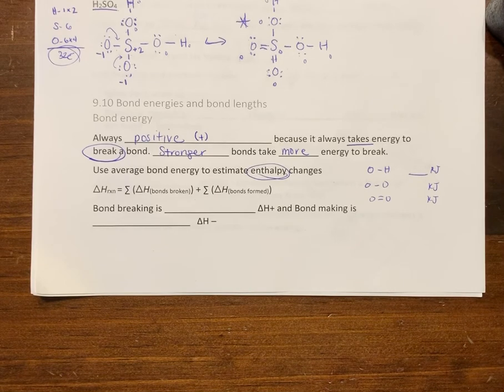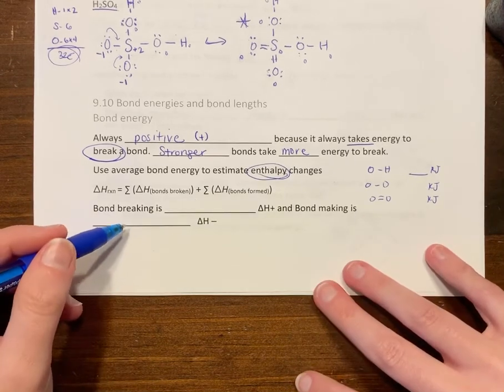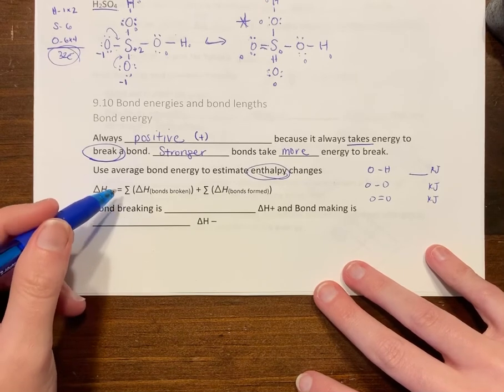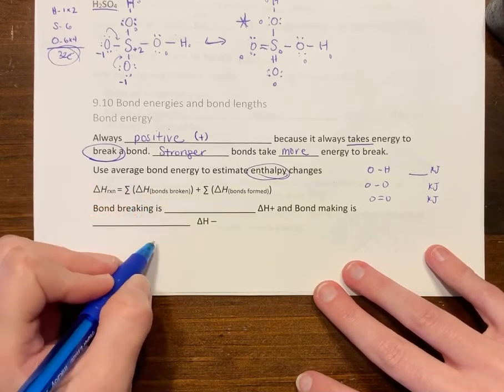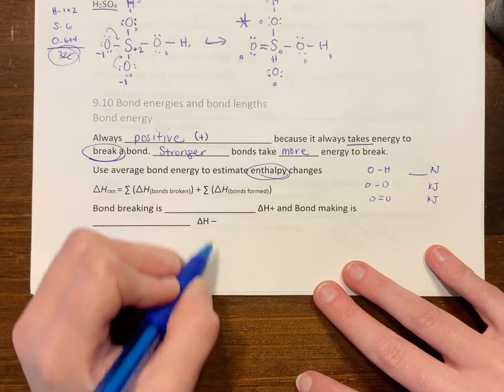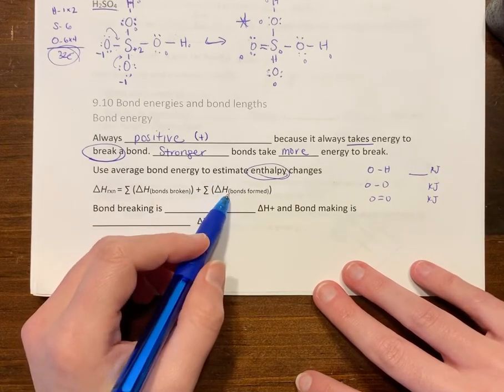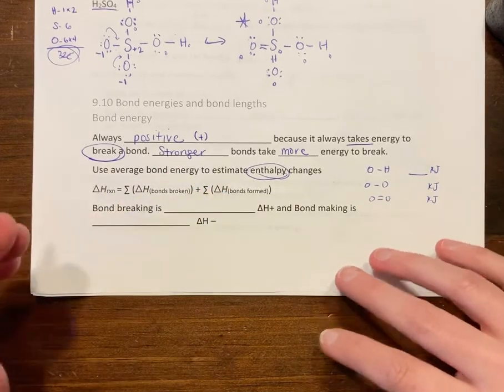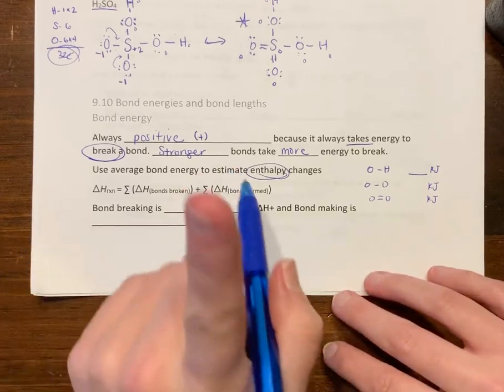It's plug and chug. You count up how many bonds that you break, then you add how many bonds that you form. If you have a big molecule but you only break one bond and make one new bond, that's all you have to count.